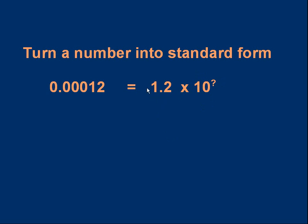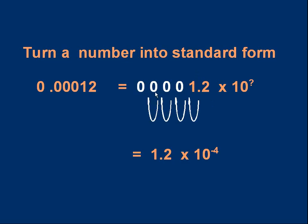It's a bit tricky moving the decimal point, so let's add some leading zeros: 000001.2. That's the mantissa. To get the original number, I divide by 10 once — decimal point moves left — then again, again, again — and now we're back to the original number with three zeros between the decimal point and the one. I had to divide by 10 four times, so the standard form is 1.2 times 10 to the minus 4.